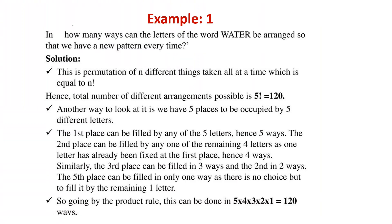You can give examples for children based on the arrangement and permutations. Here is one example: in how many ways can the letters of the word WATER be arranged so that we have a new pattern every time? Count the letters: 1, 2, 3, 4, 5. So it is 5 factorial = 5 into 4 into 3 into 2 into 1 = 120 ways. This can also be correlated with an English activity where children form new words. Ensure there is no repetition.